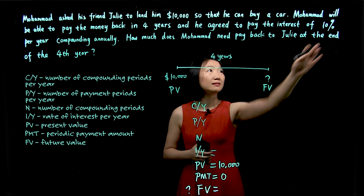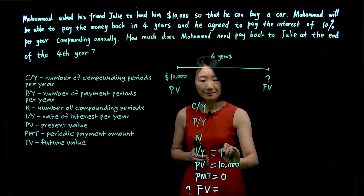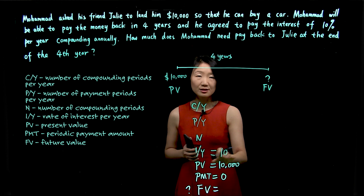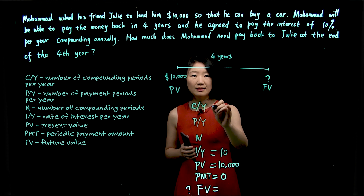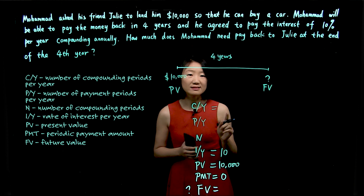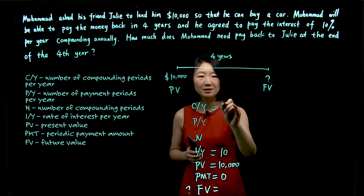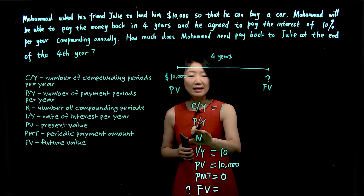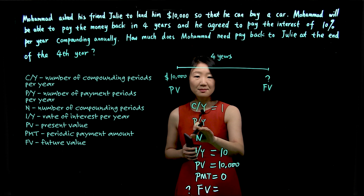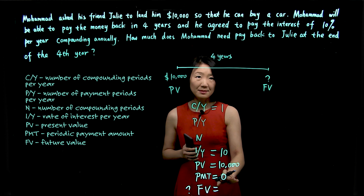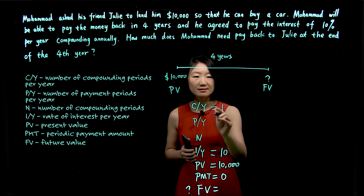Interest is 10%. For calculator entry, we will drop the percent sign and just write down 10. The interest is compounding annually, meaning compounding once a year, so compounding periods per year is just one. For PY, which represents payments per year, since our periodic payment is zero, PY takes the same value as CY.